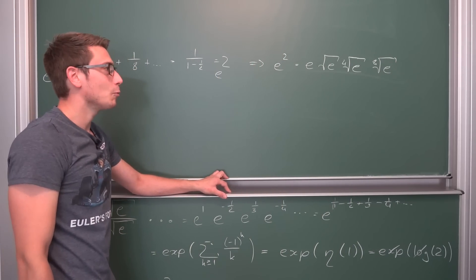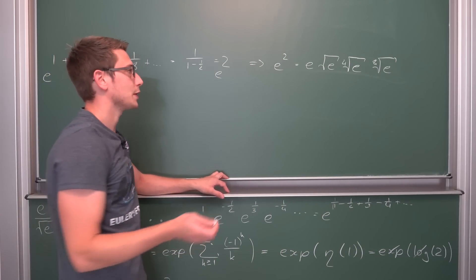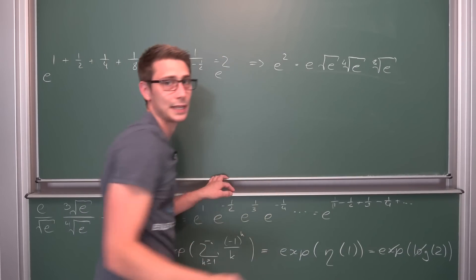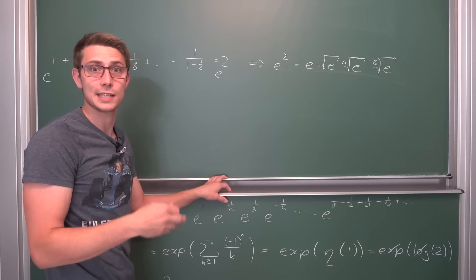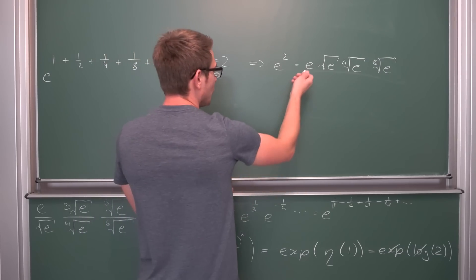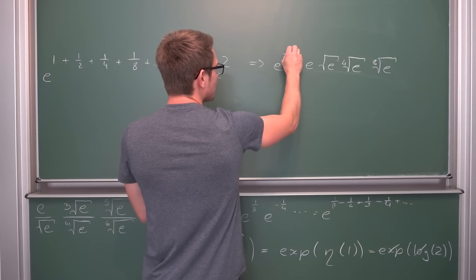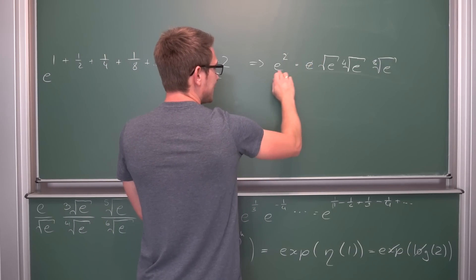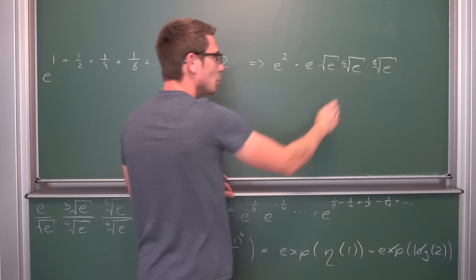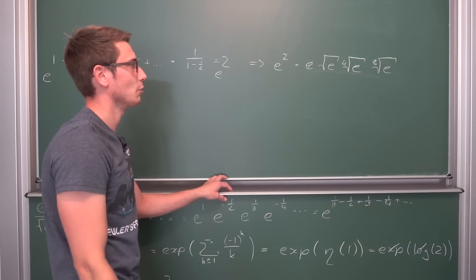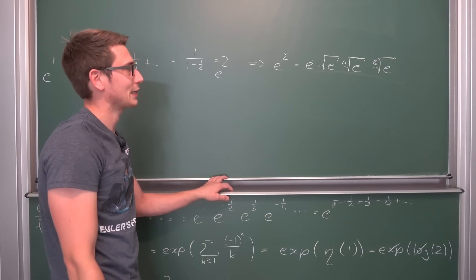e to the geometric series evaluated at one-half is going to give us e squared in the limit. In other words, e squared, which is kind of a curious limit, is going to be the same as: now we just need to break this up. This is e to the first power times the square root of e, then the fourth root of e, then the eighth root of e and so on, which is kind of curious.